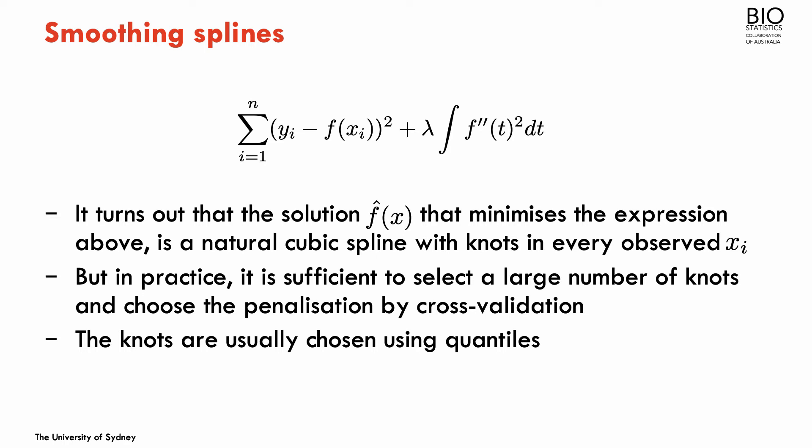But in practice, we don't put a knot in every observed x, and that's also the problem if you have multiple observations with the same x, what you do. Instead of putting a knot in every single x, we select a large enough number of knots, and then we choose the penalization by cross-validation.